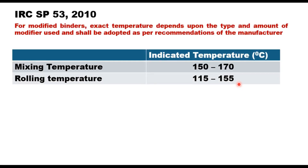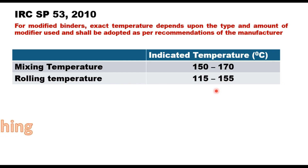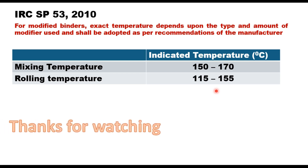Another code dealing with modified binders, IRC SP53 2010, has suggested ranges of mixing and compaction temperature for modified binders: mixing temperature in the range of 150–170°C and rolling temperature 115–155°C. These are indicative ranges only; exact temperature should be determined as suggested in NCHRP Report 648. Thank you very much for watching this video; you can write your suggestions and comments in the comment box.